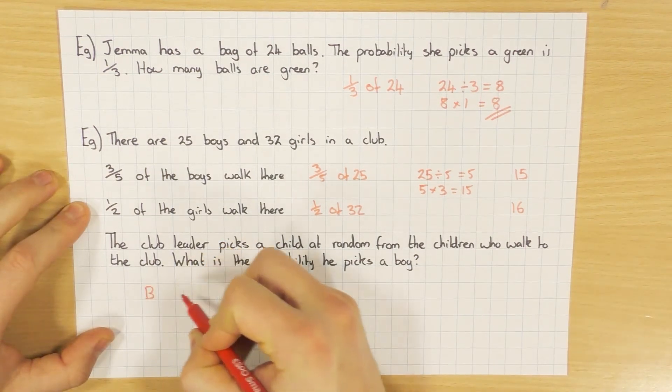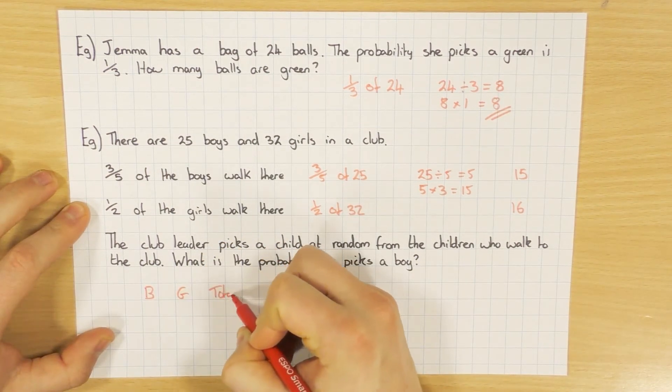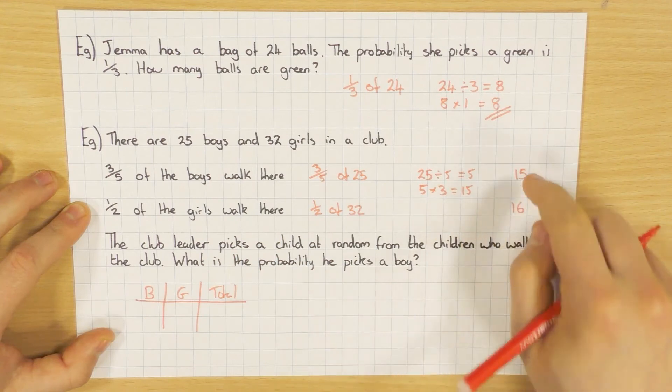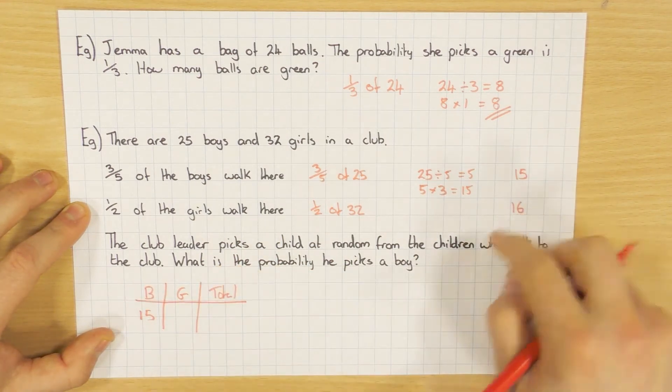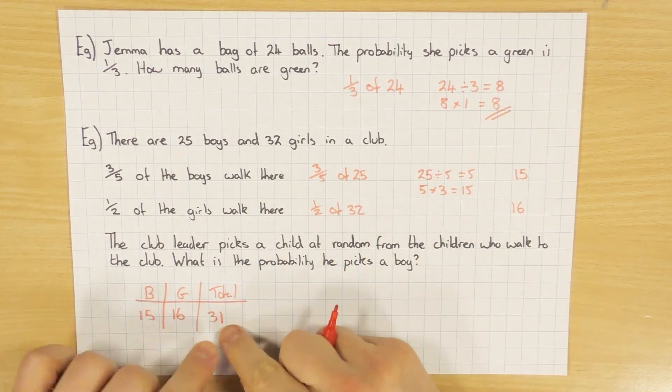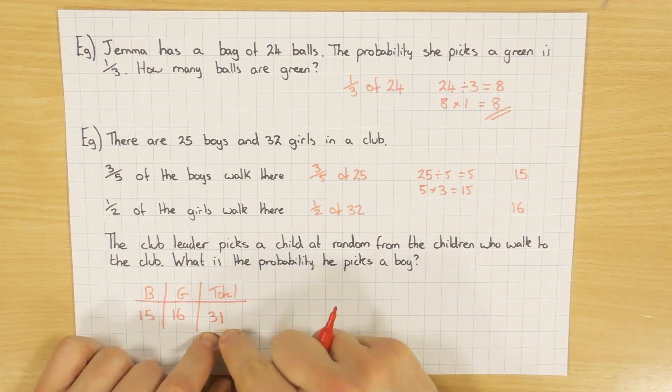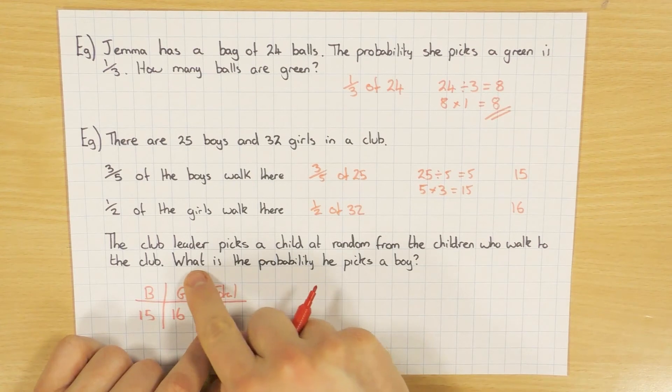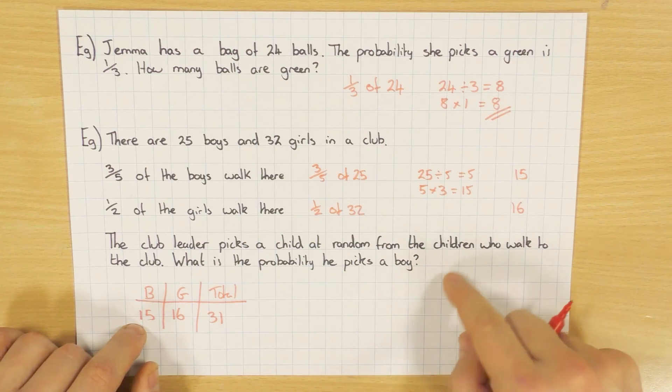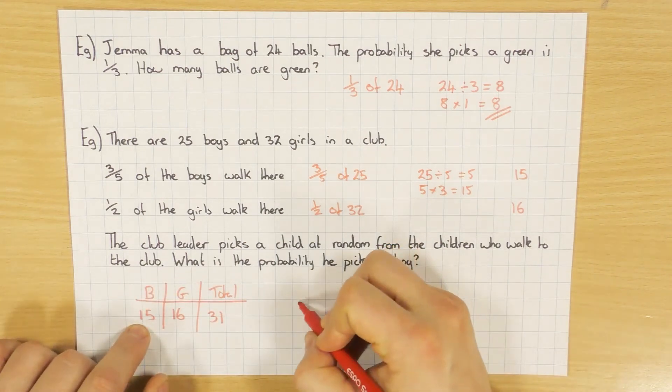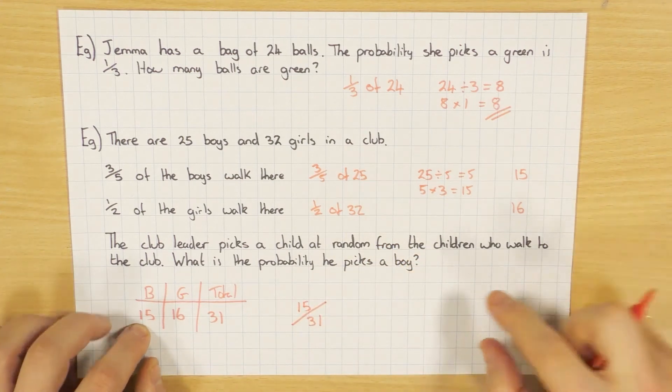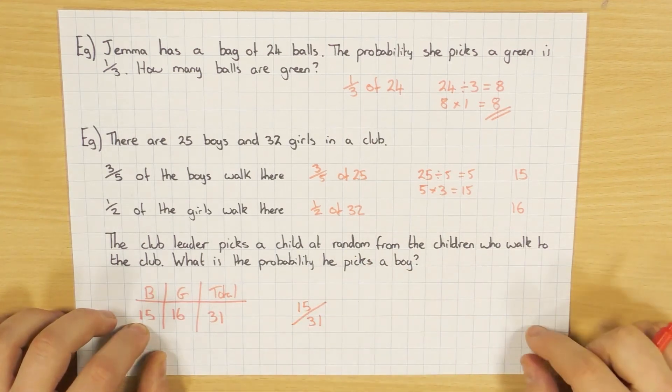So again, I'm going to draw my little table. I've got boys, girls, and a total. How many boys walk to the club? We just worked that out. It was 15. How many girls walk? 16. So what is the total? 15 and 16 is 31. That's the total of boys and girls who walk to the club. So when it asks, what is the probability he picks a boy? Well, if he's picking from the group of people who walk to school, 15 of the lads walk out of a total of 31 people who walk. So be very careful. Read the question and make sure you've got the right total.